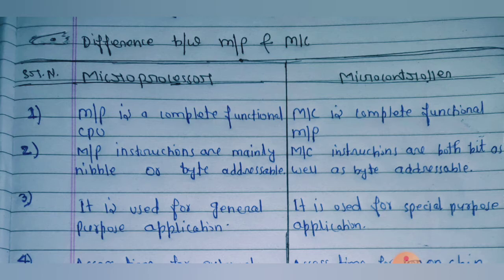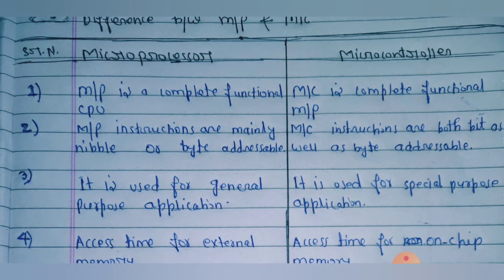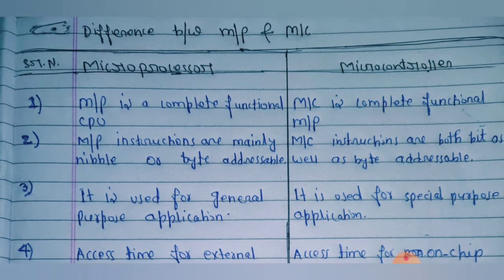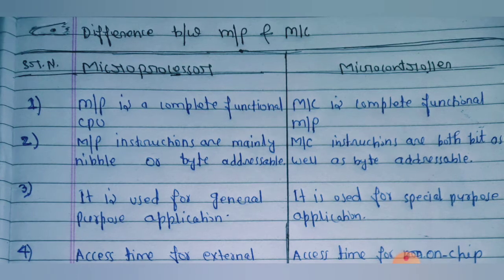Point number three: a microprocessor is used for general purpose applications, whereas a microcontroller is used for special purpose applications.